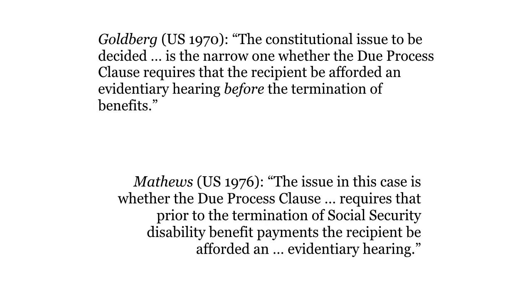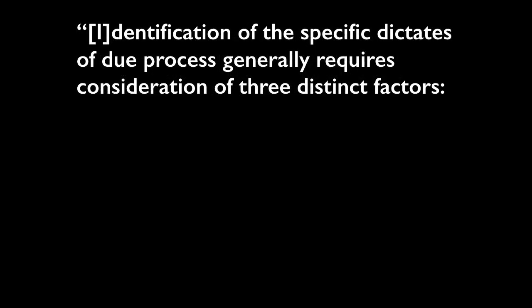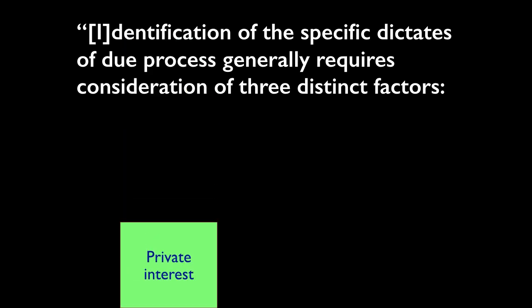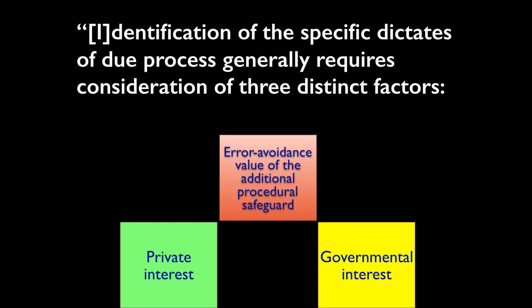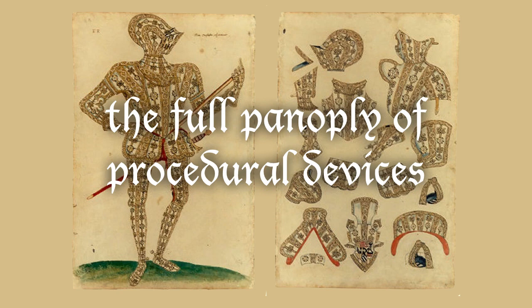We have a chance to see what the due process analysis turns on. The Matthews court tells us: 'Identification of the specific dictates of due process generally requires consideration of three distinct factors — the private interest involved, the governmental interest, and the error avoidance value of the additional procedural safeguard.' The plaintiff might wish to have a hearing that includes the full panoply of procedural devices, but Matthews teaches that each omitted device as to which a right is claimed will be scrutinized.